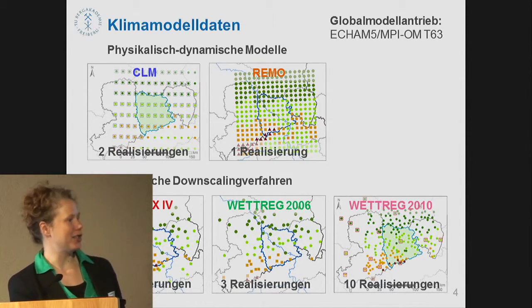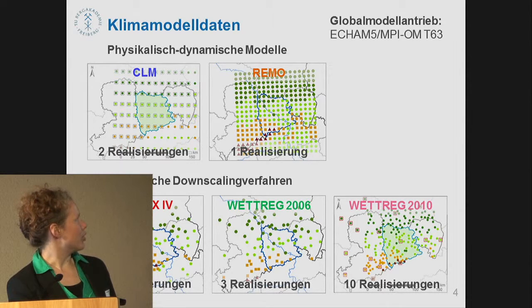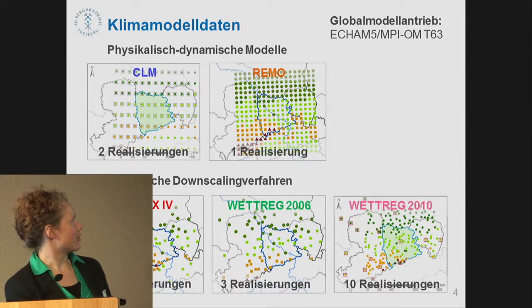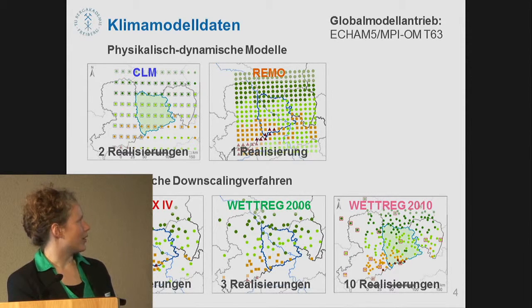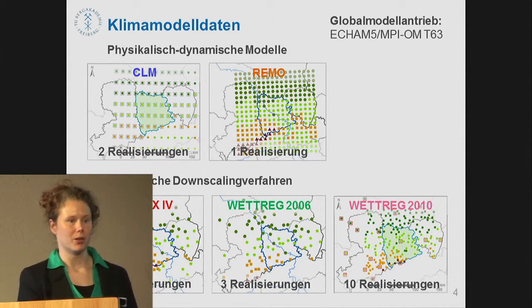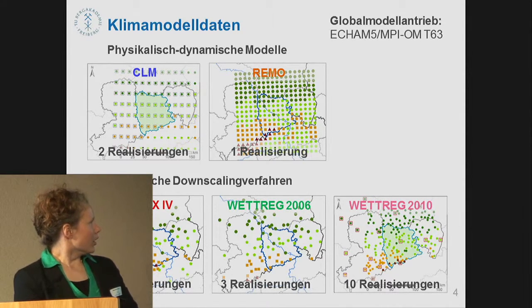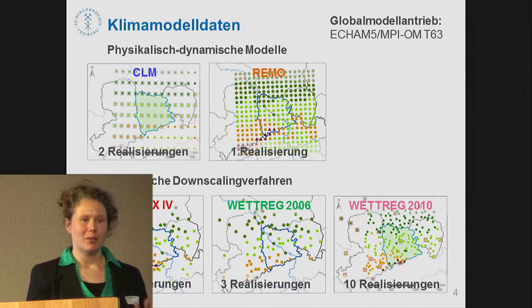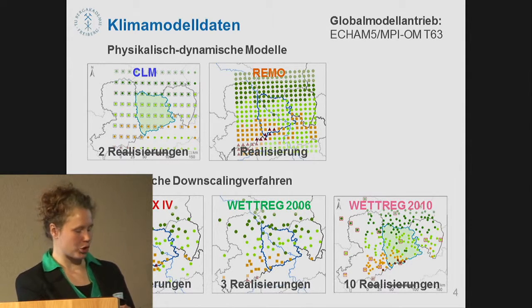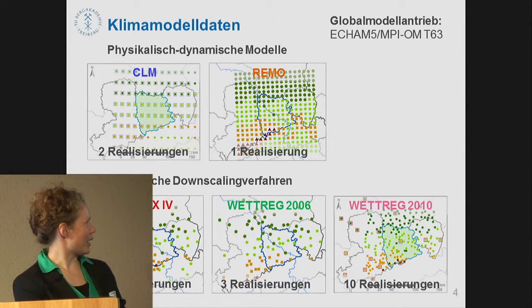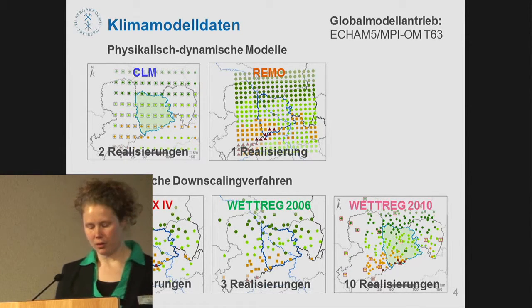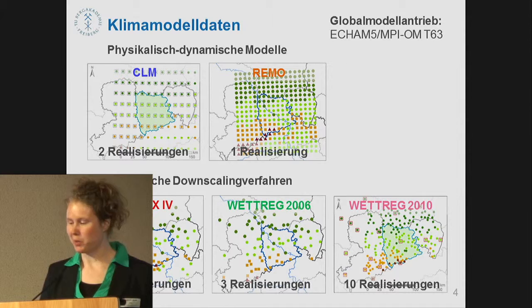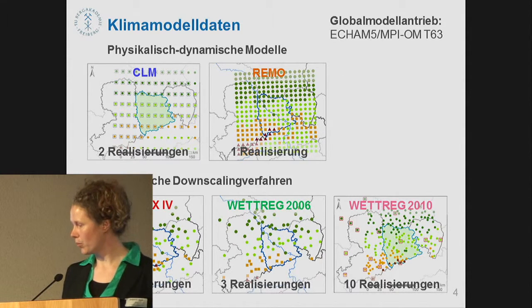For the statistical models, we have many more realizations compared to the physical dynamic models. For CLM, we have the first and second run of the global model. When comparing climate models, I must account for the different number of realizations and average them to find the mean trend. I then averaged all of them using scenario A1B.